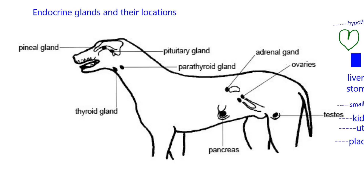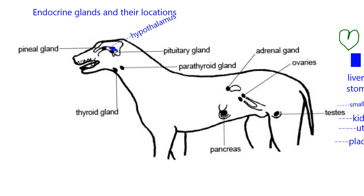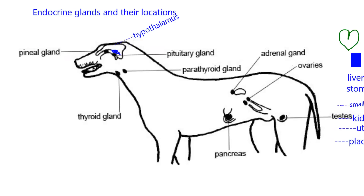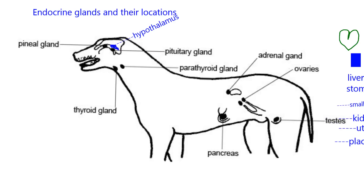I'm going to put some blue right above the pituitary gland — this is in the brain — and bring in the label for the hypothalamus. We should know that the hypothalamus sits right above the pituitary gland and it often controls what the pituitary gland is releasing. These are all endocrine glands and tissues.